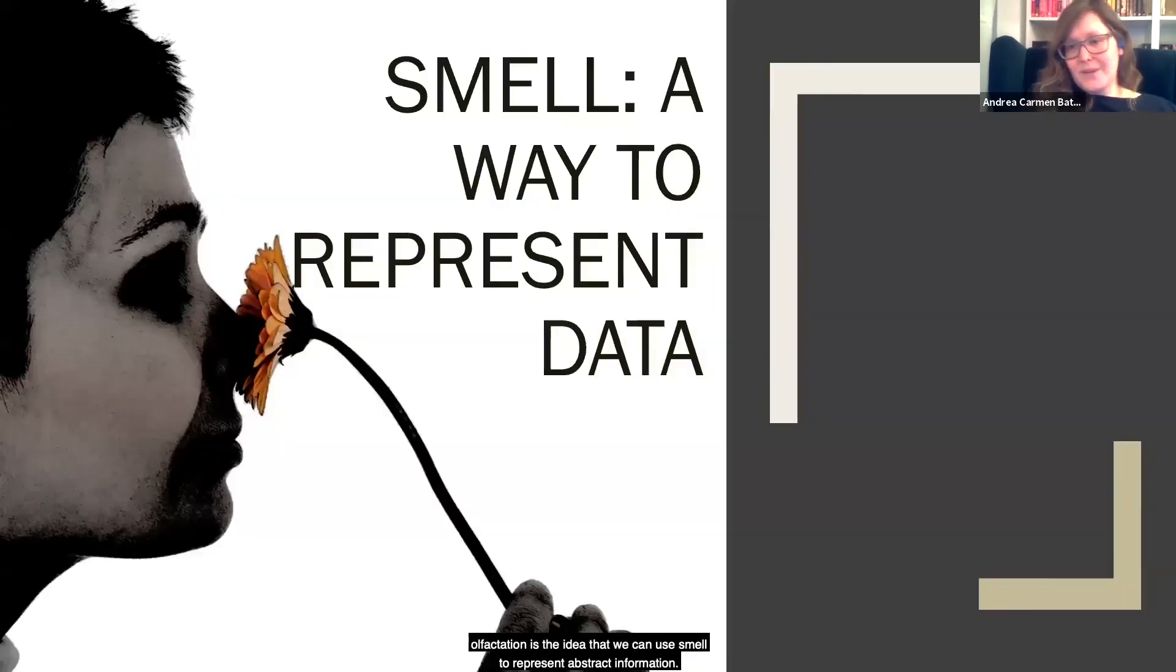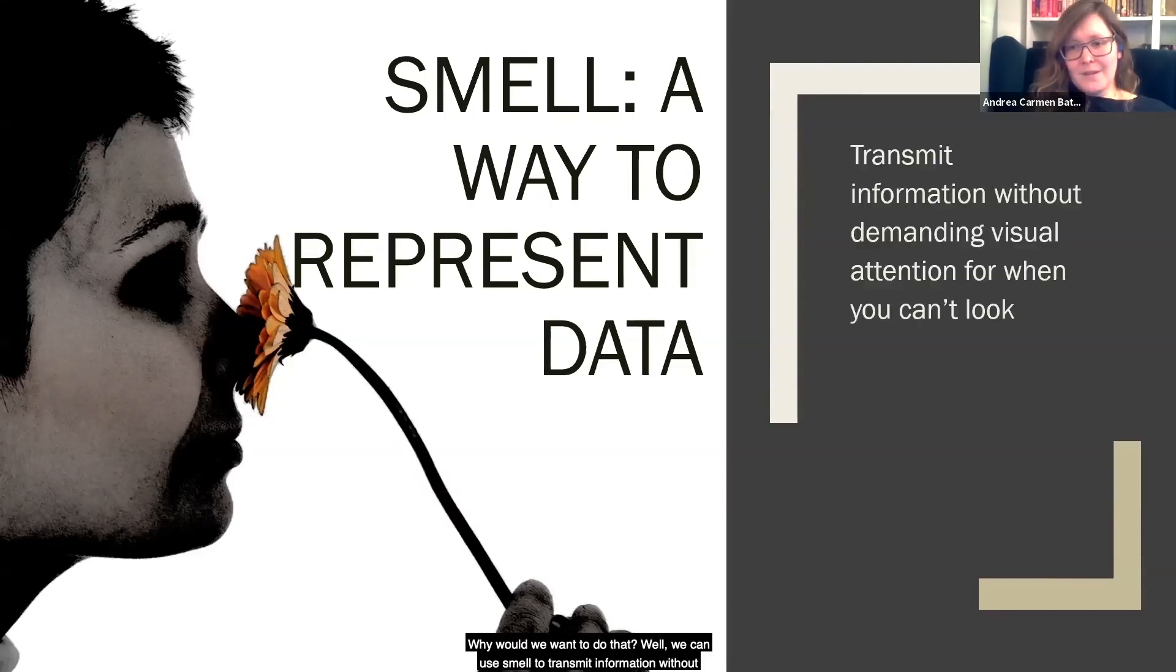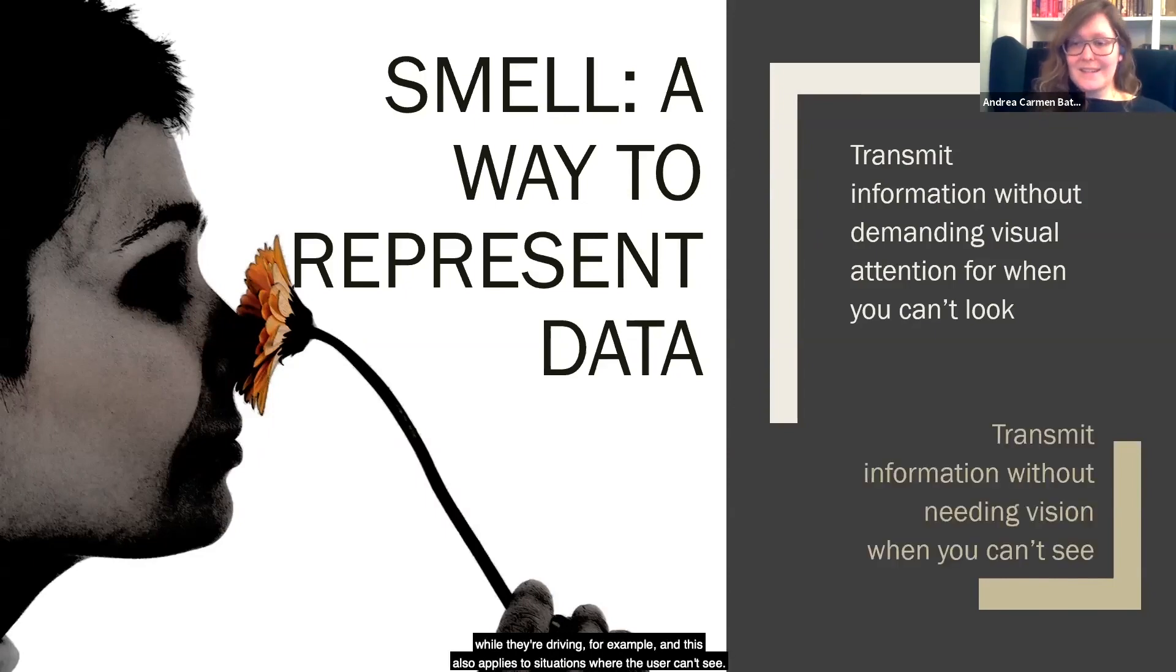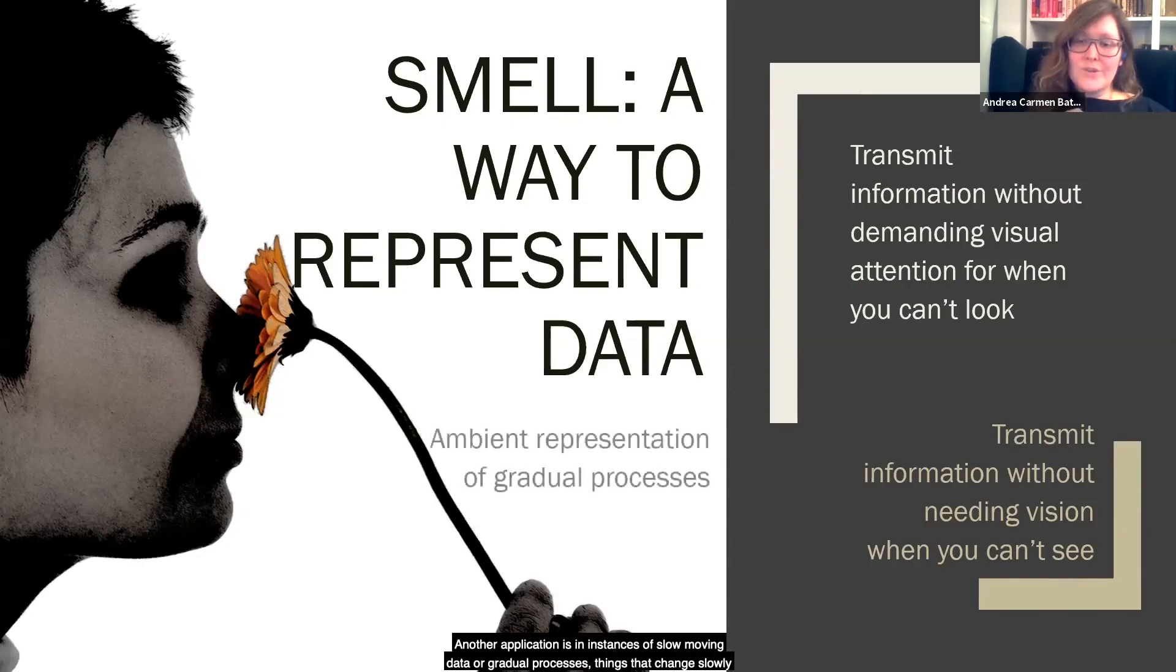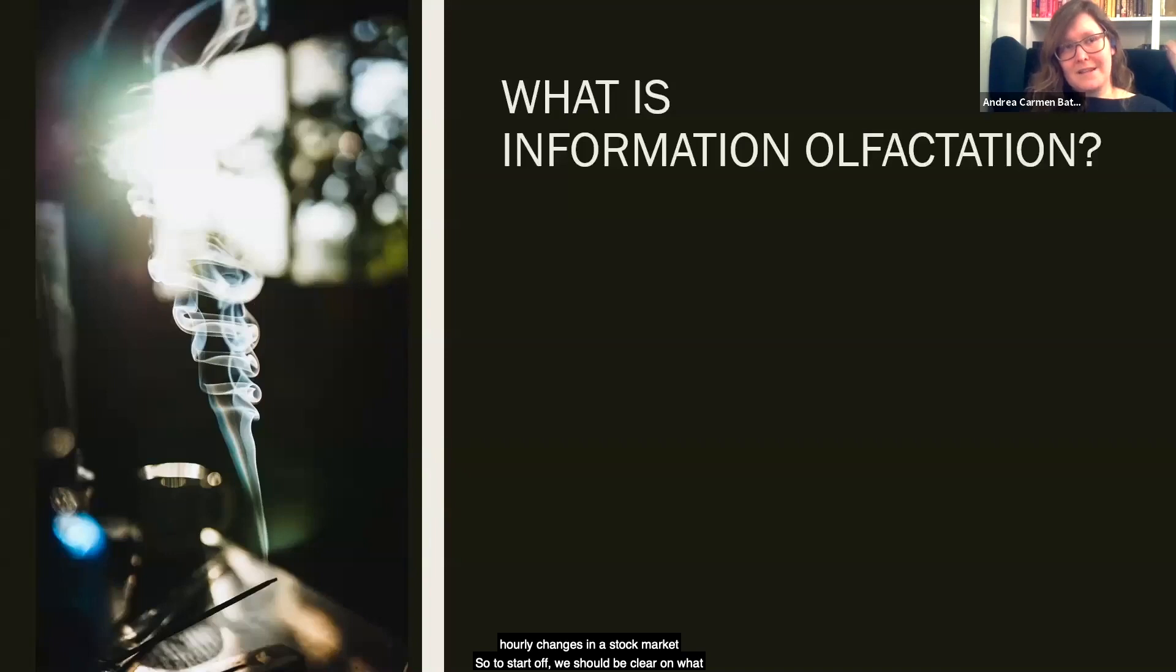Informational olfactation is the idea that we can use smell to represent abstract information. Why would we want to do that? Well, we can use smell to transmit information without requiring the user's visual attention if they need to be looking somewhere else, like while they're driving, for example, and this also applies to situations where the user can't see. Another application is in instances of slow-moving data or gradual processes, things that change slowly in real time but represent an overarching pattern that's relevant to a work process, like the hourly changes in a stock market set of indicators.